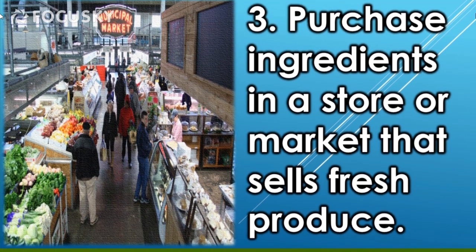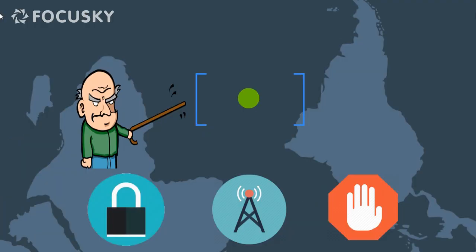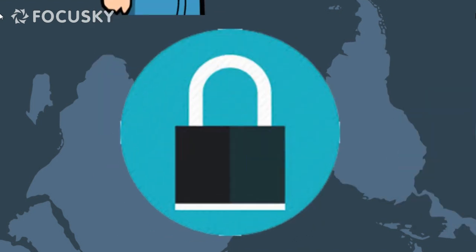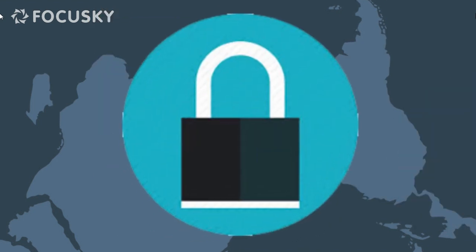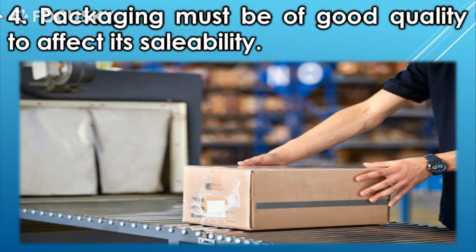Three: purchase ingredients in a store or market that sells fresh produce. Four: packaging must be of good quality to affect its saleability.